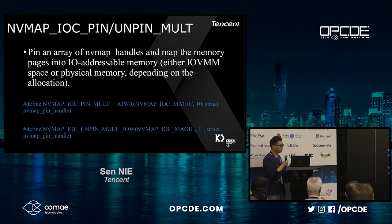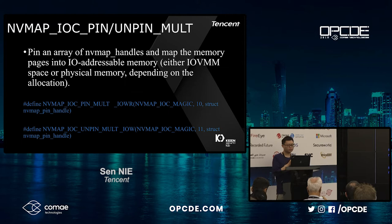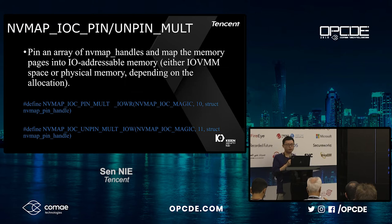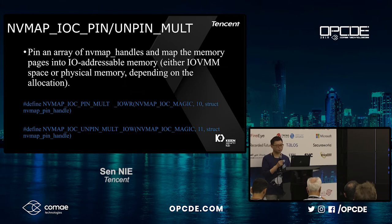The last IO code — NVMap IOC pin or unpin multiple handles — is a very important feature in the NVMap module. It pins a list of NVMap handles and maps the corresponding memory pages into the IO VMM space. This interface is used to communicate between the user-space process and the GPU. Importantly, you cannot unpin an unallocated NVMap handle — if you do, you will trigger the BUG_ON function.